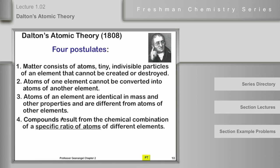The fourth one is the one about chemical combination. And that is that compounds result from the chemical combination of a specific ratio of atoms of different elements. Now, he had the advantage of knowing about the law of definite composition. And it is obviously that this fourth postulate refers to.